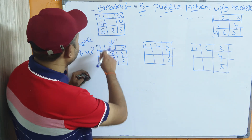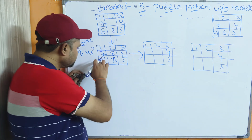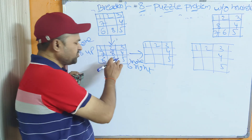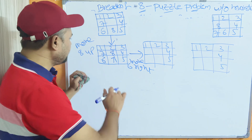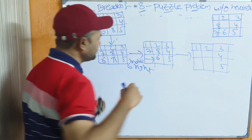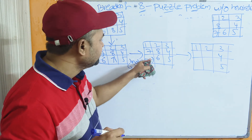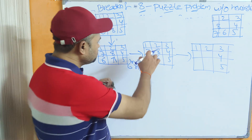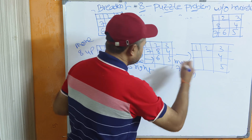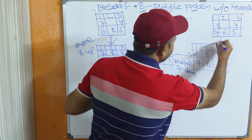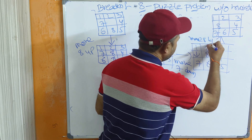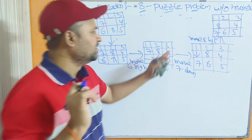Next, this is the blank space, so we move 6 towards the right — move 6 right, or move space towards the left. Now 6 is moved to the right, and 7, 8 remain the same. Next, we can perform an operation on 7: move 7 down. Finally, the goal state requires 8, 7, 6 — so move 8 left. 8 is moved towards the left and this is the solution.